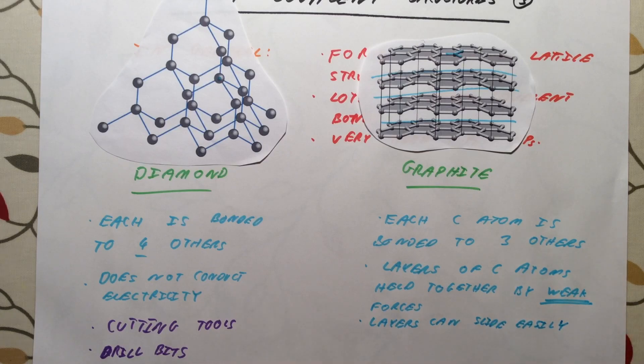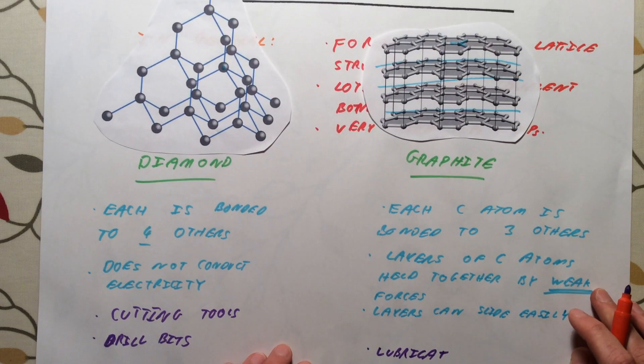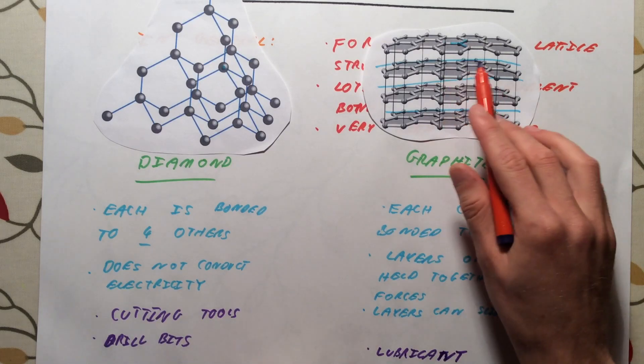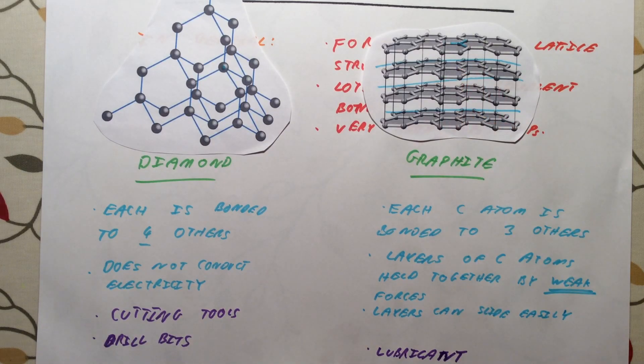And this actually gives us our first use of graphite, which is as a lubricant. It's used in engines and that kind of thing, because the layers can slide and because they've only got weak forces between them, it can be used as a lubricant.